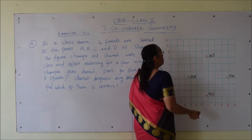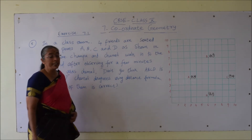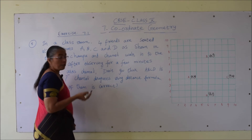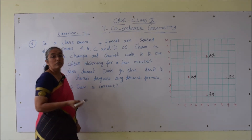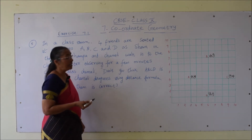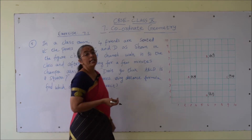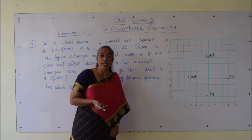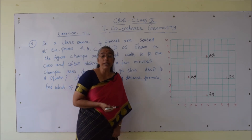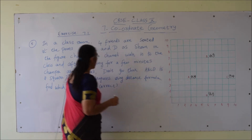Now let us find out the distances AB, BC, CD and DA to find out whether they are forming a square. Not only if all sides AB, BC, CD and DA are equal — we also have to check whether the diagonals are equal or not, because if only all 4 sides are equal, it could be a rhombus. To prove they are forming a square, we have to prove all 4 sides are equal and also the diagonals are equal.